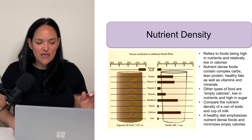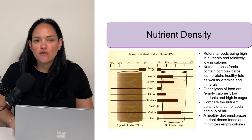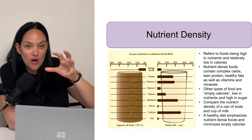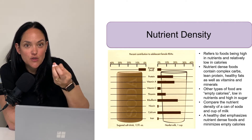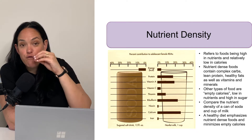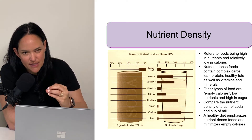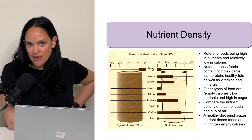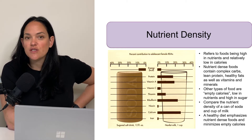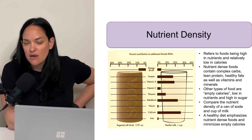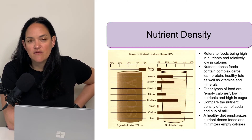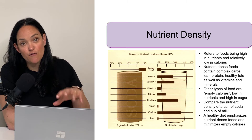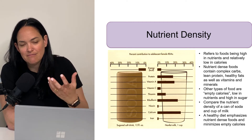Another important term is nutrient density. Nutrient density basically looks at the quantity of various nutrients within a food for the amount of calories in that food. For instance, if I'm consuming 100 calories of milk versus 100 calories of Coca-Cola, that 100 calories of milk is going to be more nutrient dense — I'm going to have a lot more nutrients for those 100 calories consumed.